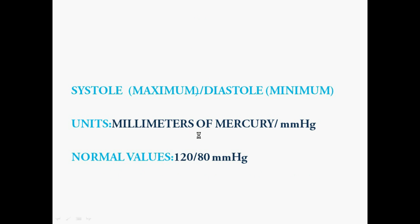We have two components here: the systolic pressure and the diastolic pressure. The systolic pressure is the maximum pressure exerted, and the diastolic pressure is the minimum pressure. The units of BP are millimeters of mercury, that is mmHg.